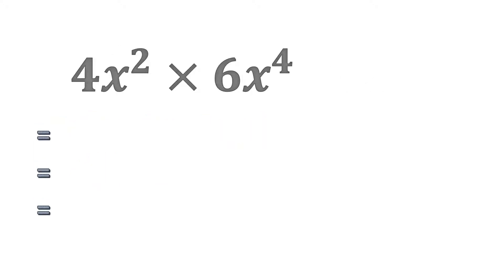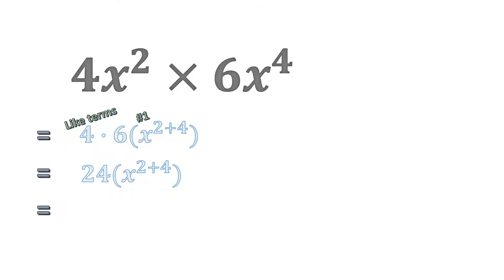In our second example we have 4x to the power of 2 times 6x to the power of 4. We need to get like terms together, so we multiply 4 with 6, and where the bases are the same we add the powers using our first rule. 6 times 4 is 24, and x to the power of 2 plus 4 gives us 24x to the power of 6.